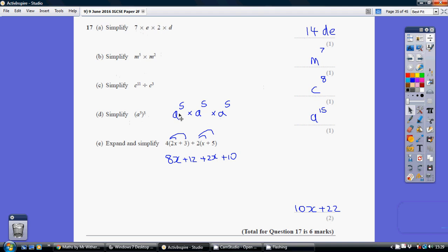And then we can go back to the rule we used in part b. When we're multiplying, we add the powers. 5 and 5 and 5 is 15, so our final answer is a to the power of 15.